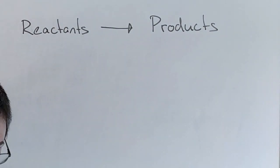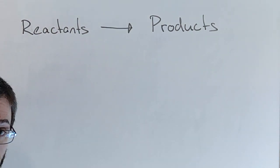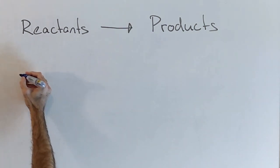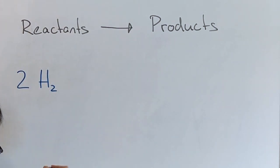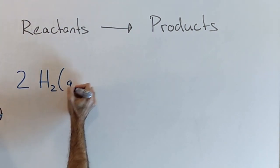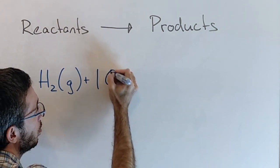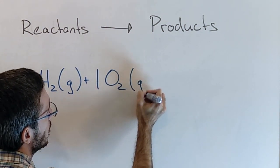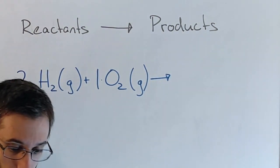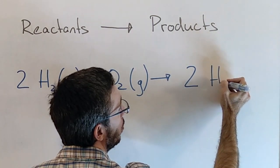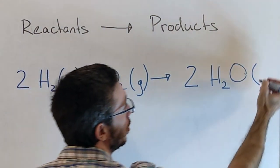As an example, if hydrogen reacts with oxygen, we're going to end up with water. And the complete reaction looks as follows. So we have two hydrogen molecules as gas and one oxygen molecule as gas, which will create two water molecules in the liquid form.